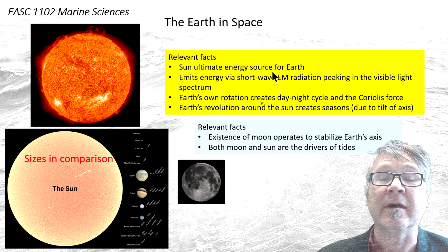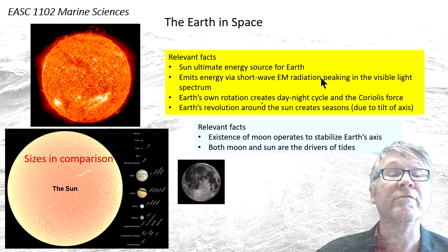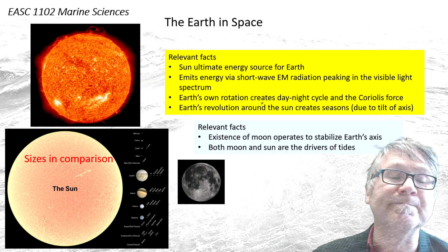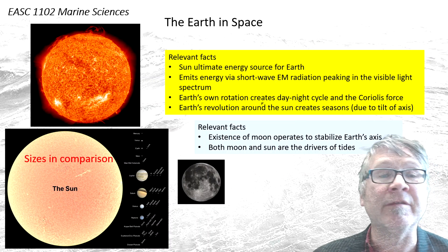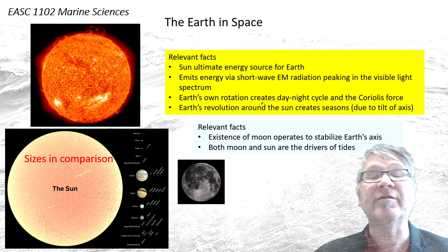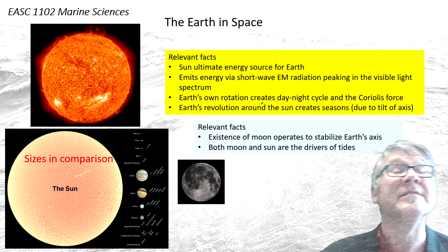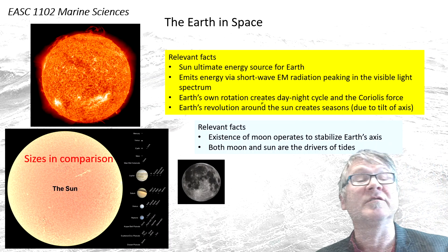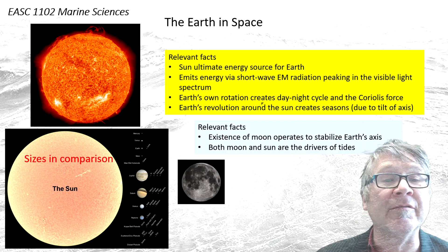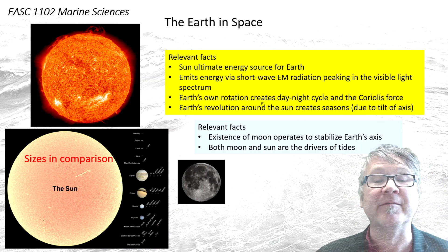The Earth's rotation creates the day and night cycle and the Coriolis force. The Earth's revolution around the Sun creates the seasons, as mentioned before, due to the tilt of the Earth's axis.